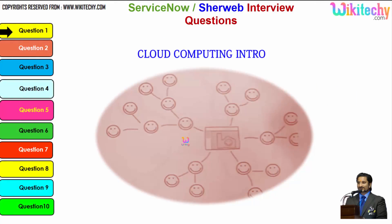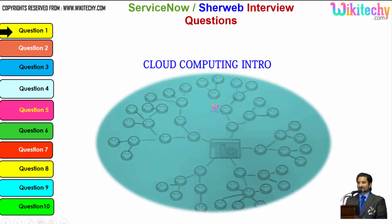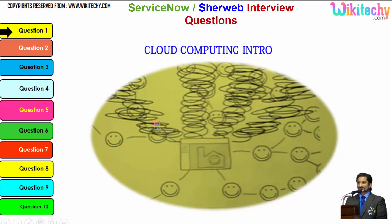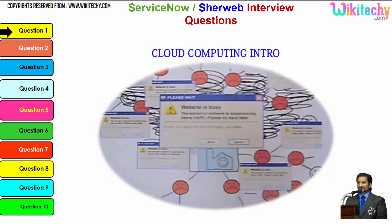Let's talk about the cloud computing intro. This is a computer connected to a server, and this server is monitoring this computer. Once the network becomes bigger, the monitoring becomes tougher for that particular server. If more computers are added, the network gets really big, the monitoring system becomes really slow, and there is a possibility that the network crashes or the server couldn't monitor specific networks.